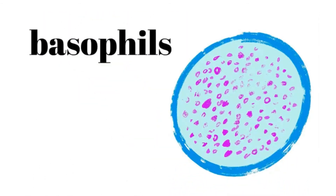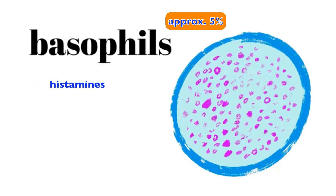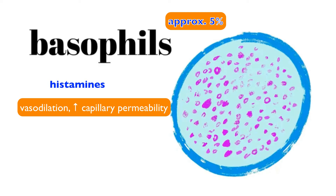We also have basophils, another type of leukocyte that makes up about five percent of leukocytes in circulation. They release histamines, which cause vasodilation and increase capillary permeability. Capillaries have fenestrations or pores in them that allow certain entities to leave the bloodstream and move into the interstitial fluid and surrounding cells. There are plasma proteins that cannot squeeze through those pores normally, but basophils increase permeability by expanding the size of the pores, allowing plasma proteins to enter the interstitial fluid.